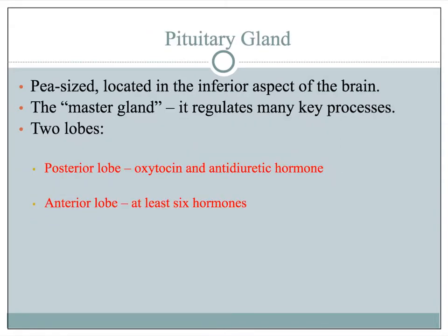This presentation is focusing on disorders of the pituitary gland. The pituitary gland sits in the patient's brain — it is a very pea-sized gland in the inferior aspect of the brain. It's often called the master gland as it produces multiple hormones. The posterior lobe has oxytocin and antidiuretic hormone, while the anterior lobe secretes at least six different hormones that affect growth and development.